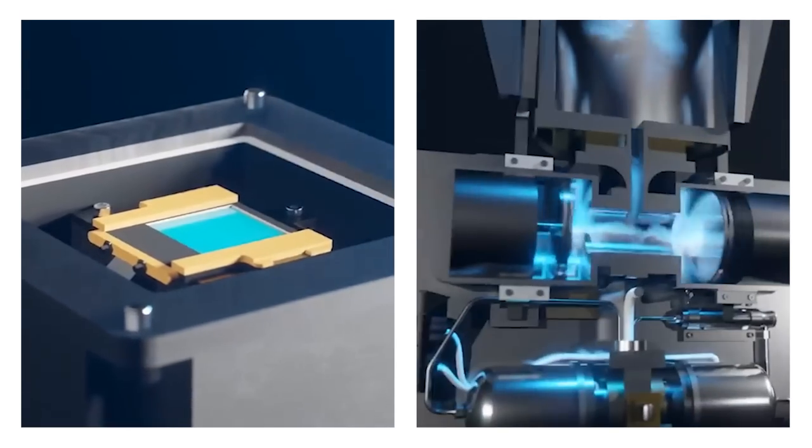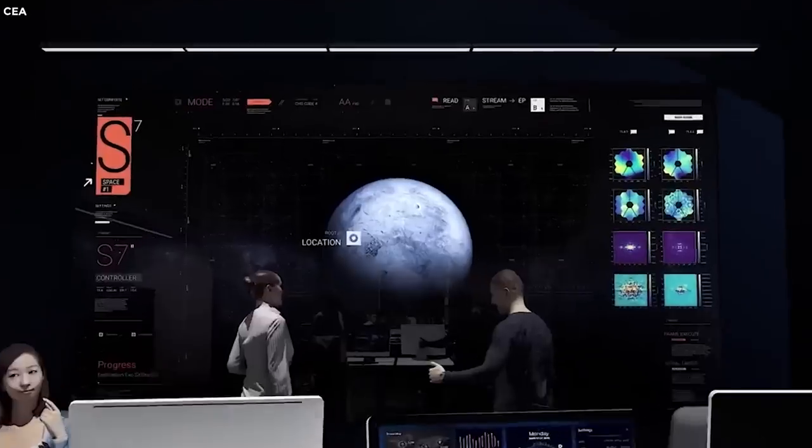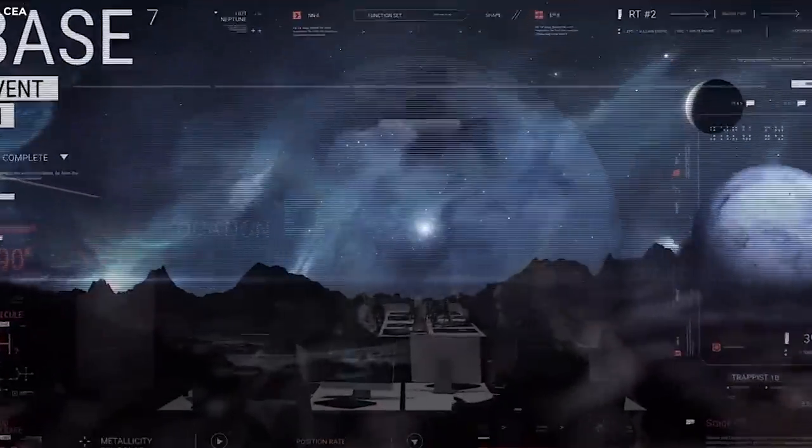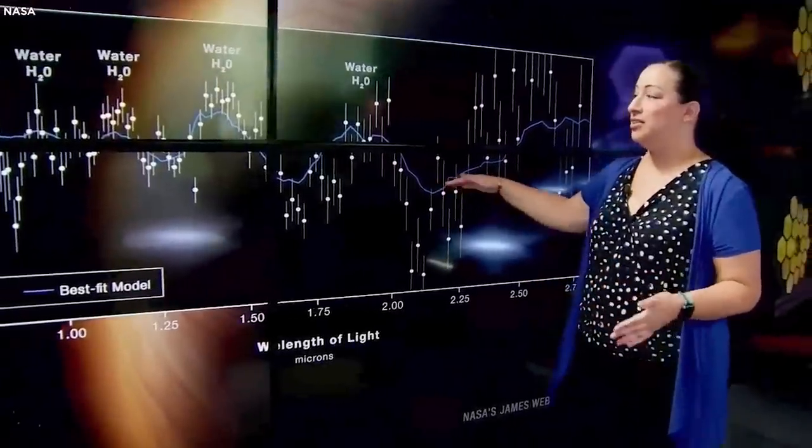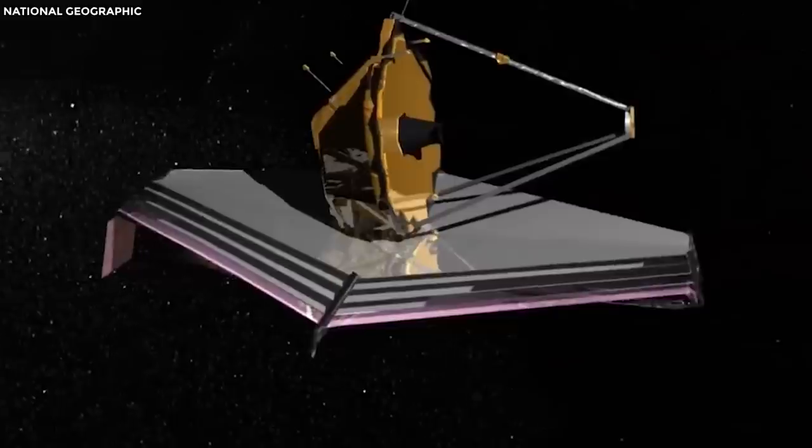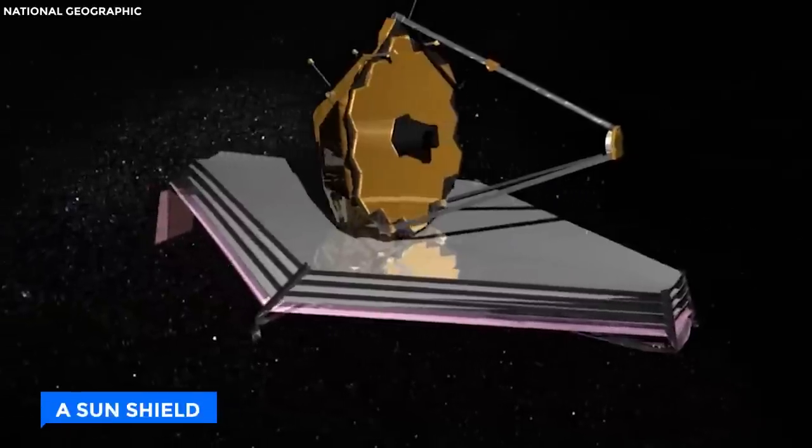This collaboration of tools, from micro-shutters to cryo-coolers, pushes the boundaries of space exploration. Now we face a new challenge: heat from the Sun, Moon, and Earth. An ingenious solution emerged, a sunshield.